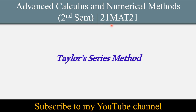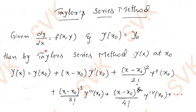This is the Taylor series expansion. It is given by: y(x) = y(x₀) + (x − x₀)·y'(x₀) + (x − x₀)²/2! · y''(x₀) + (x − x₀)³/3! · y'''(x₀) + (x − x₀)⁴/4! · y⁽⁴⁾(x₀) + ... They will provide a first-order, first-degree differential equation with initial condition y(x₀) = y₀.